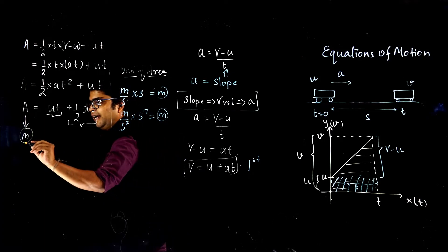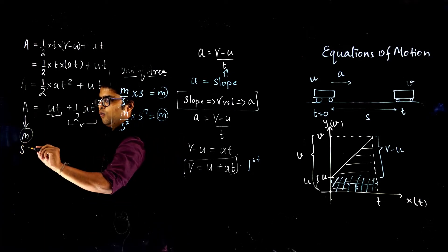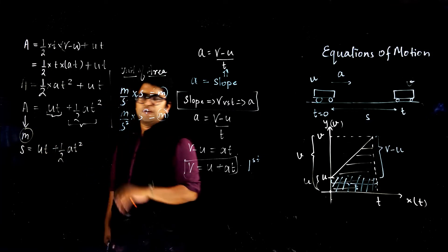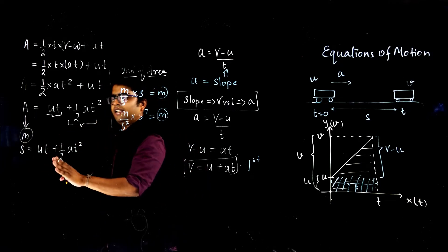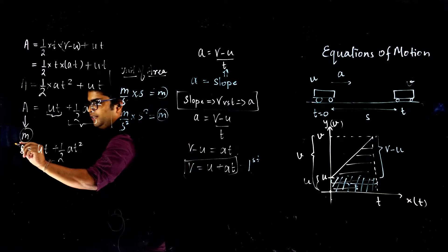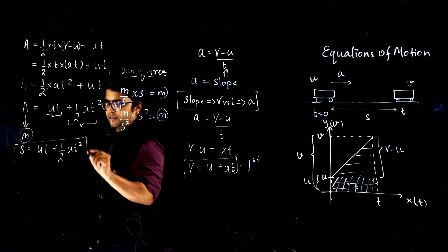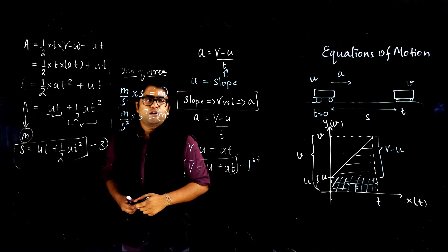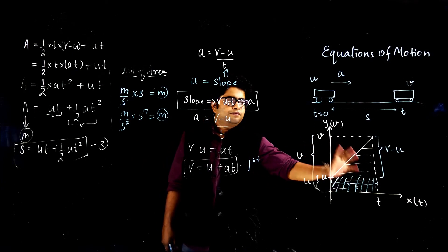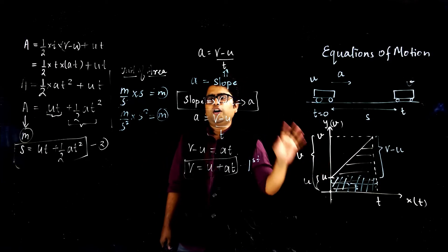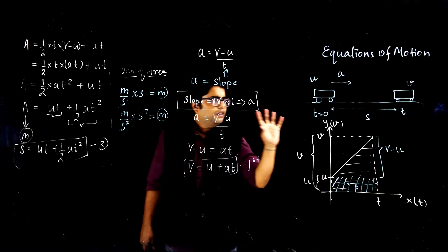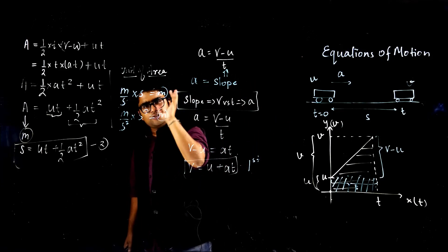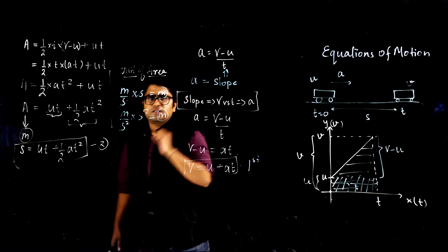So displacement is equal to ut + ½at², where s is displacement, u is initial velocity, t is time, and a is acceleration. This is the second equation of motion. From the graph, we found the slope and got the first equation of motion, and we found the area under the curve to get the second equation of motion.